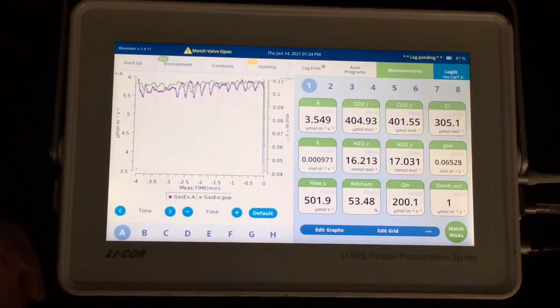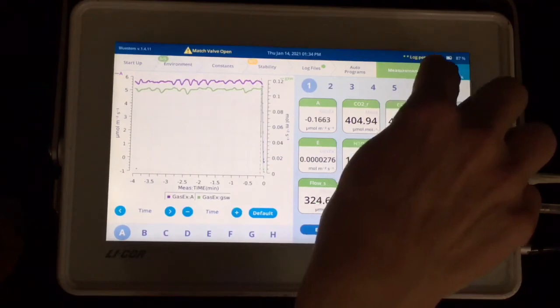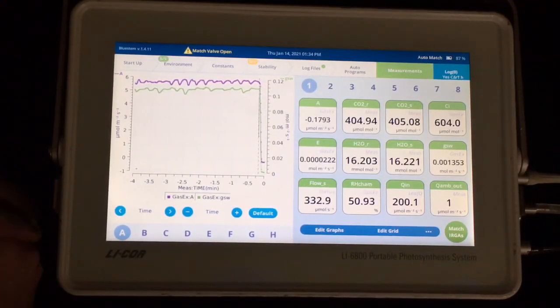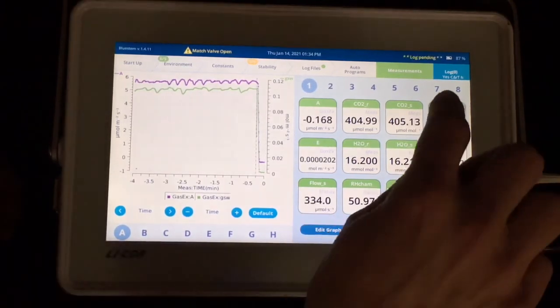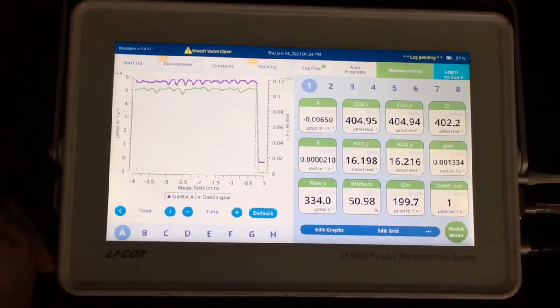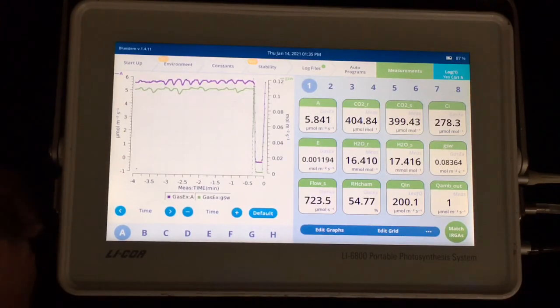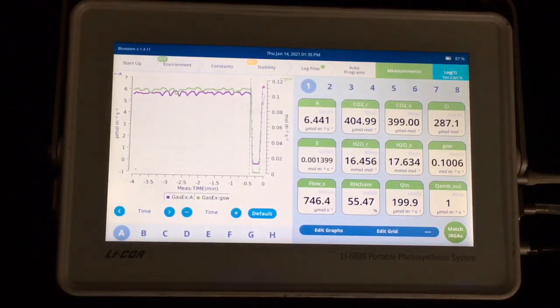And I would just press my log button. And it's going to go ahead and give that flash and log the data point. And in this case because of that match requirement it's going to go ahead and automatically match my analyzers. And then once that's done. That will increment the number of data points to one. And it will go back to sort of normal mode. And this is where I can unclamp and move to my next leaf.